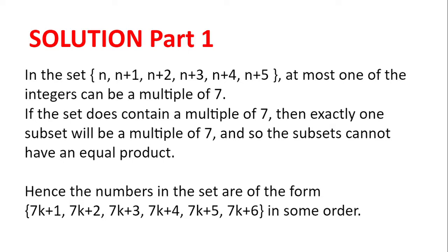Hence, we don't have a multiple of 7 in the set, and the numbers are of the form {7k+1, 7k+2, 7k+3, 7k+4, 7k+5, 7k+6} in some order. n is not necessarily 7k+1.